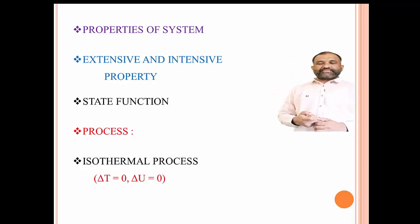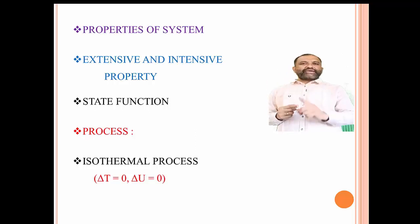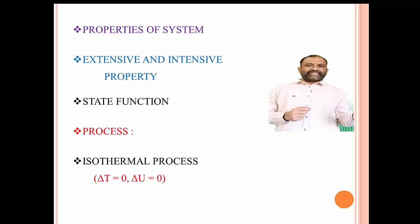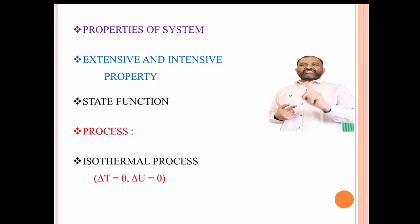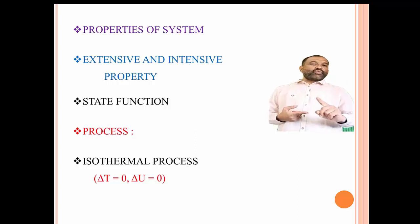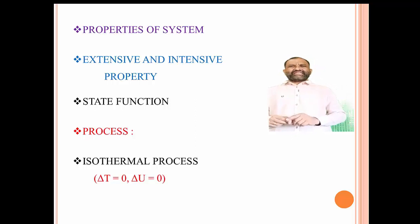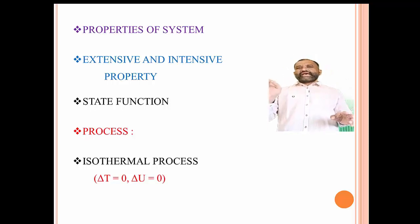A process means a path, way, or mechanism by which a system changes from one state to another state — that is from initial state to final state. It is known as a process. The transition from one equilibrium state to another equilibrium state is called a process.